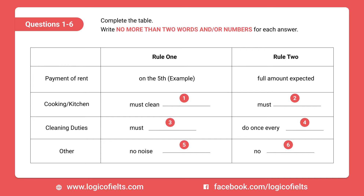Now we shall begin. You should answer the questions as you listen, because you will not hear the recording a second time. Listen carefully and answer questions 1 to 6. Richard, as we discussed before with this extra bedroom in the house, we should advertise for another tenant, but I think we've got to establish rules this time. We already have two rules about the rent money — we pay on the 5th and expect full payment with no excuses. But I mean additional rules apart from those two. OK, there's certainly no harm in that. Remember the problems we've had with people in the past. I think we should learn from those bad experiences.